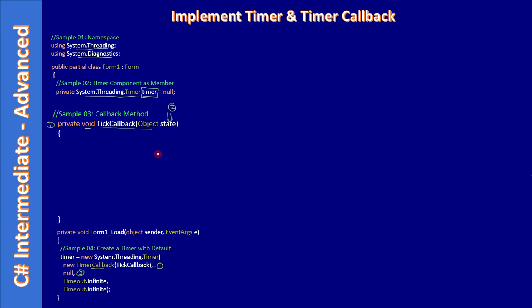If you want to send data to the tick callback, you can create an object and pass it here. Remember, if the timeout overlaps, this becomes a shared object — and it is not thread-safe. You would need to do synchronization inside the tick callback. The first and second parameters are handled; the third is due time.